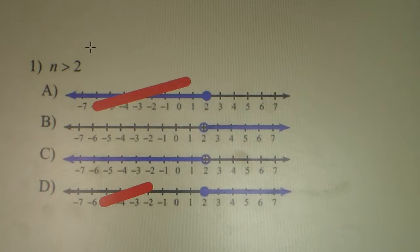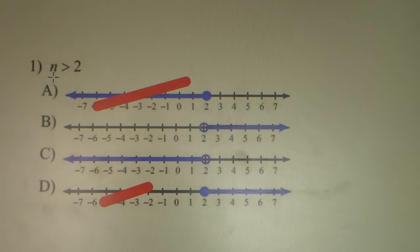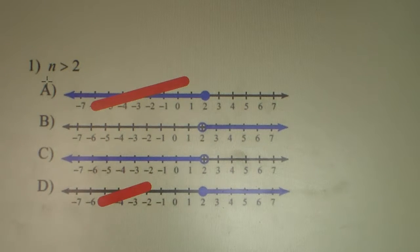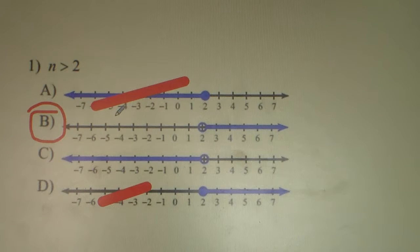The other thing we need to talk about is greater than or less than. This reads N is greater than 2. Remember, we always want to read left to right. N is greater than 2 — the alligator always eats the biggest number, that's always going to eat the greatest number. Greater than is to the right, so it's option B. So 1 is B.